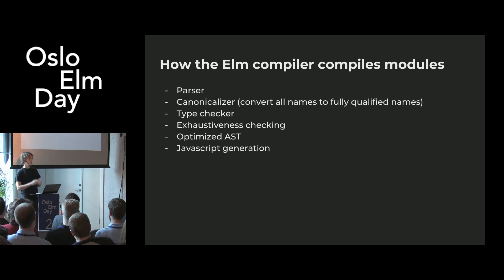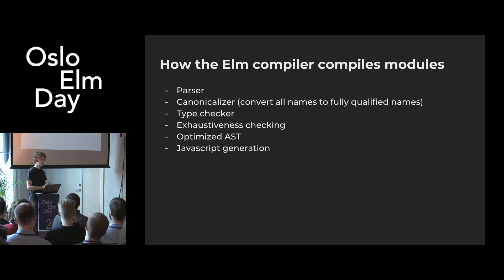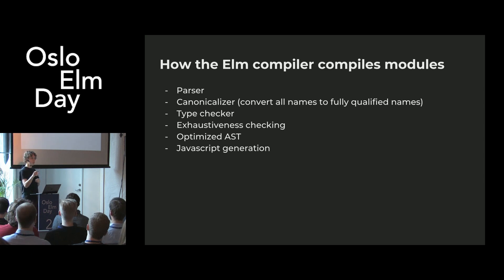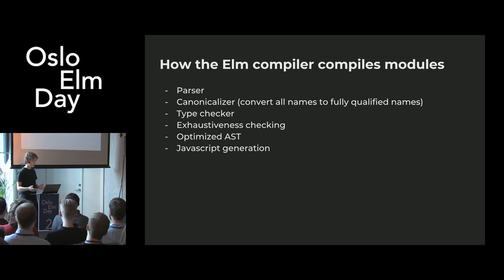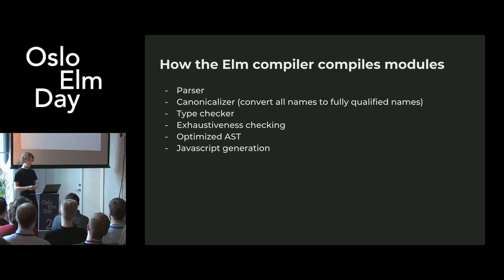Then, for all of these different modules in parallel, it parses the entire file and canonicalizes it. Canonicalization means that when you write `import MyModule exposing blah` and use `blah` in your source code, it converts that to `MyModule.blah`. Then it runs the type checker, the exhaustiveness checker, and converts the canonicalized AST into an optimized AST — which is halfway to JavaScript — doing things like tail recursion optimization and compiling pattern matching down to data structures.